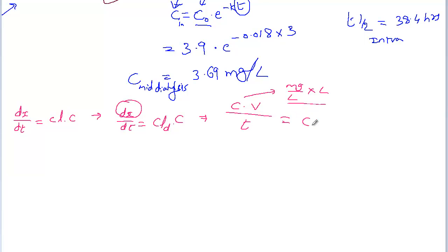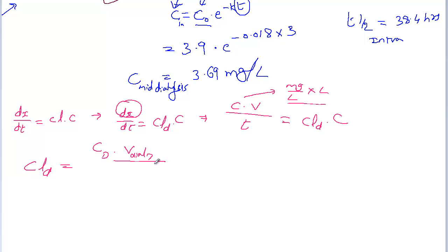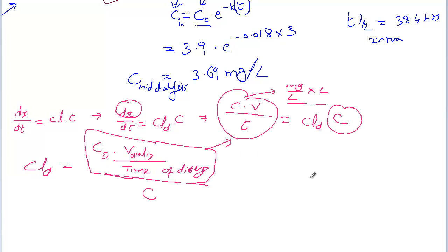Divided by the time of dialysis, that equals clearance during dialysis times concentration. So rearranging, clearance during dialysis equals the concentration in the dialysate times the volume of the dialysate, divided by the time of dialysis, divided by the plasma concentration.